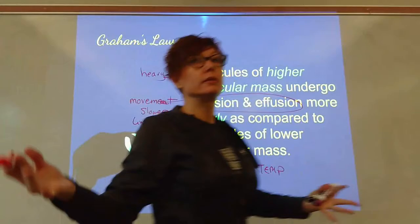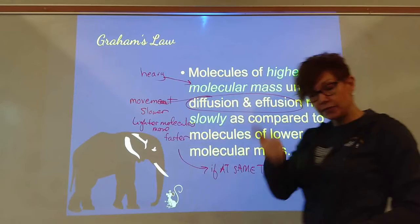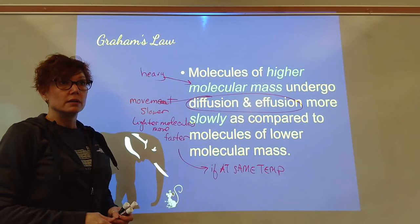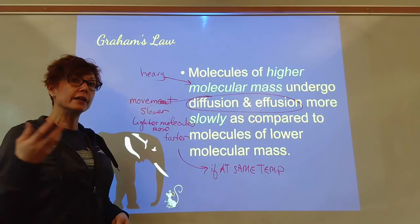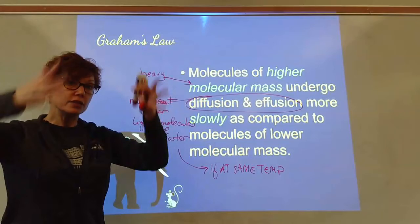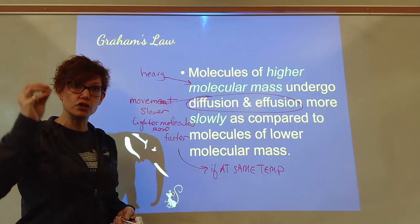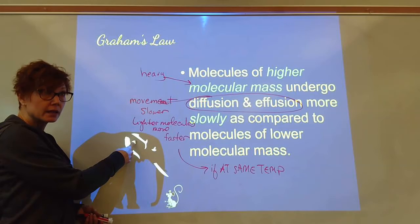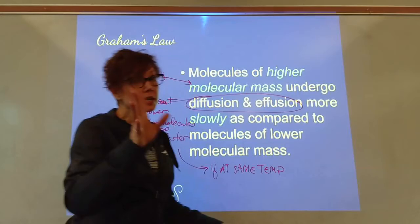Right now in this room, air is made of oxygen, carbon dioxide, and a lot of nitrogen. Nitrogen (N2) is lighter than O2, which is lighter than CO2. So your nitrogen molecules are moving the fastest, oxygen a little slower, and carbon dioxide the slowest — all based on mass.